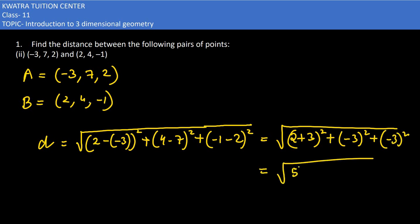So 2 plus 3 is 5, 5 ka square. Minus 3 ka square, last also minus 3 ka square. So 5 square is nothing but 25, plus 9, plus 9. So 25 plus 18 will give you 43. So that would be root 43 units.